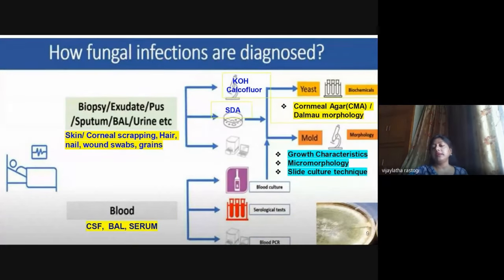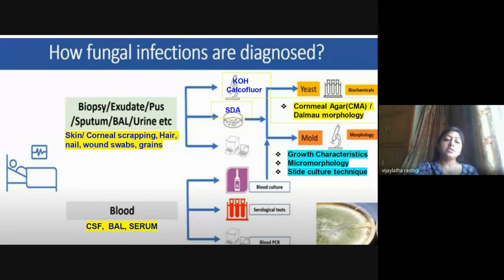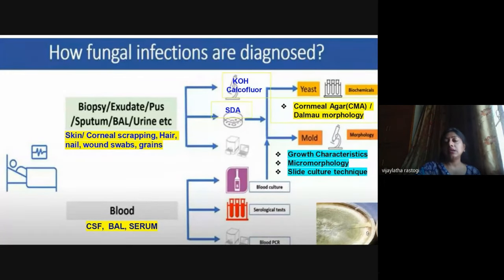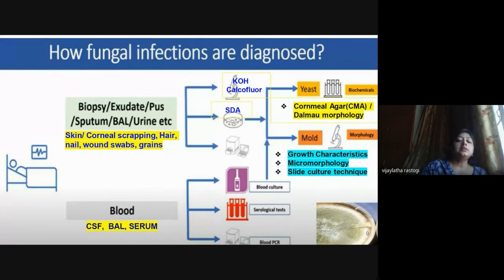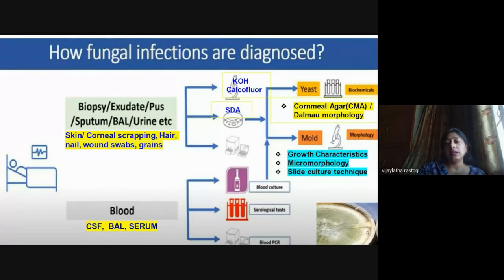How are fungal infections diagnosed in the laboratory? Samples are collected based on symptoms. For wound infections or mycetoma: biopsy from deep wound infections; exudate, pus, or grains from superficial wound infections or draining sinuses. For respiratory infections: sputum and bronchoalveolar lavage (BAL) fluid—an invasive but diagnostically valuable specimen. Sputum must be differentiated from saliva; it is expectorated from the lungs during coughing.